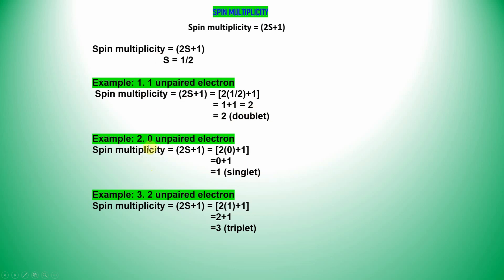Now we will see the 0 unpaired electrons example. Using the formula 2S plus 1, the spin electron value is 0. So 2 times 0 equals 0, then 0 plus 1 equals 1. That means a singlet. If your system has all electrons paired, you need to write spin multiplicity 1, that is singlet.